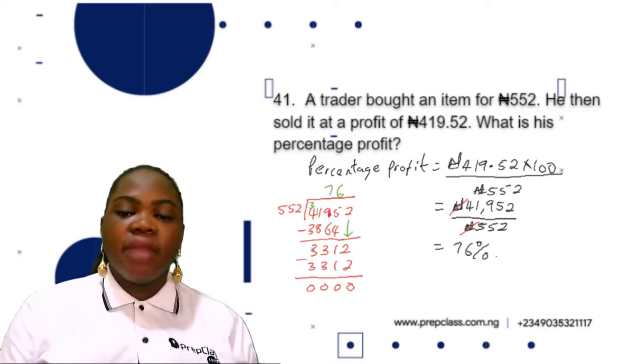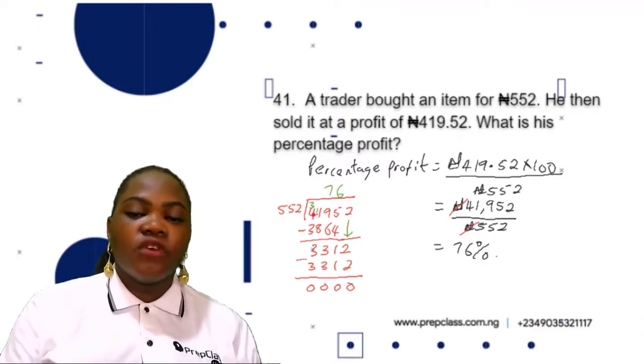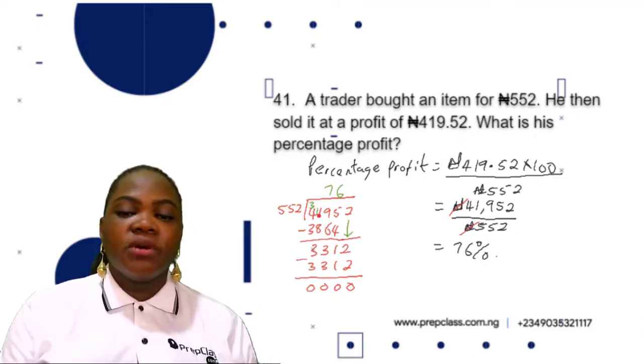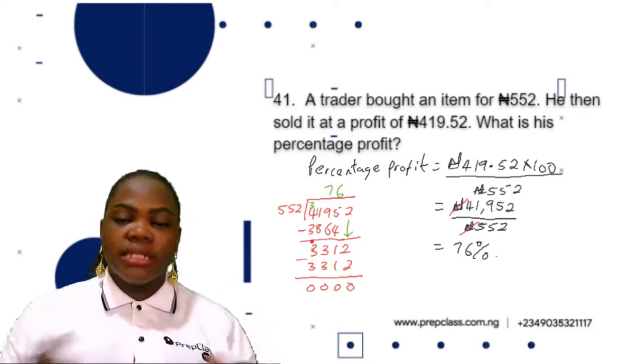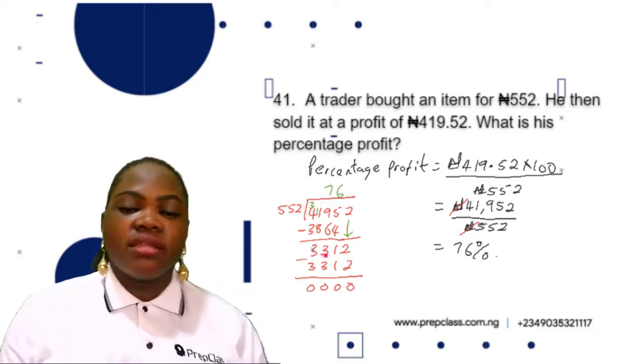5 minus 4 is 1. 9 minus 6 is 3. 1 minus 8 is not possible, so we get 1 from 4 which remains 3, put 1 here it becomes 11. 11 minus 8 is 3, then 3 minus 3 is 0.